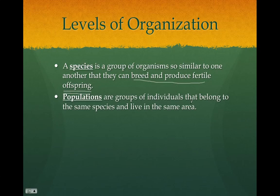A population is a group of individuals that belong to the same species and live in the same defined area. For example, you can define the City of Orange as your area, and then there is a population of squirrels or red-tailed hawks within that defined area.